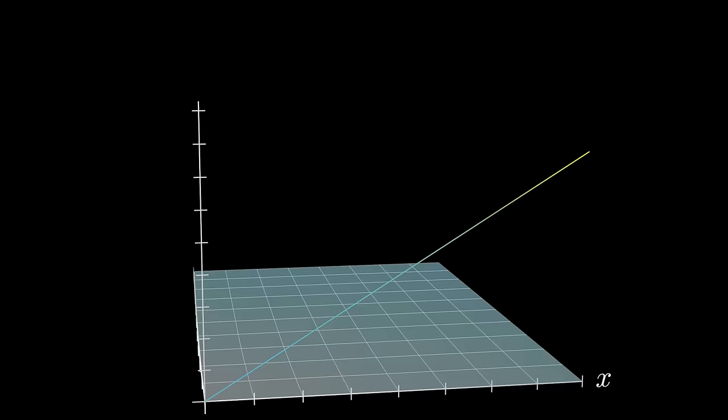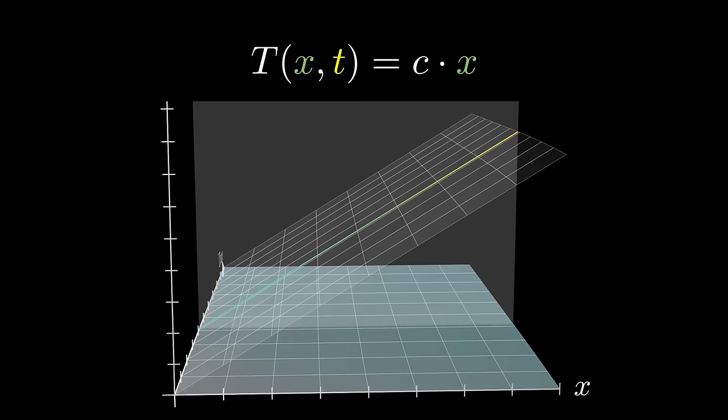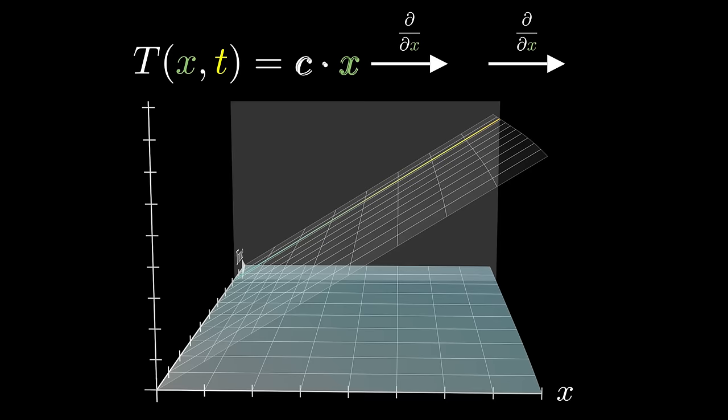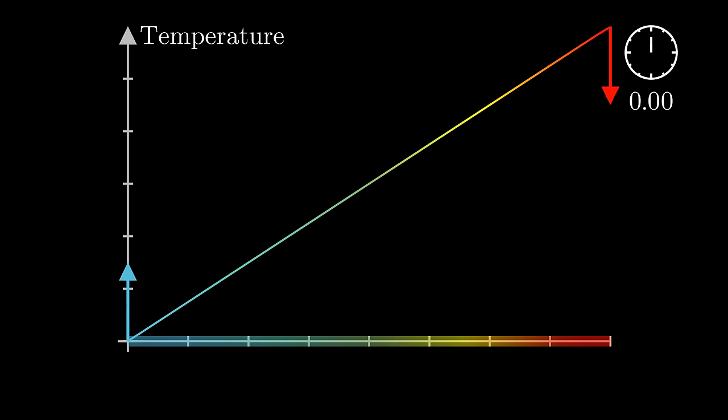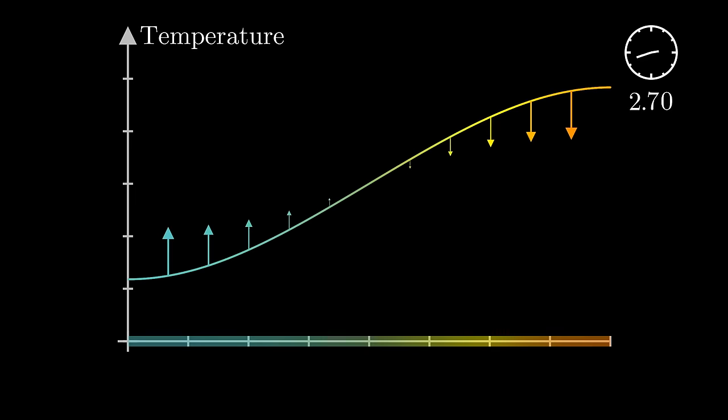In fact, let me give you an even simpler solution to the PDE, which fails to describe actual heat flow, a straight line. That is, the temperature function will be some non-zero constant times x and never change over time. The second partial derivative with respect to x is indeed zero, I mean there is no curvature, and its partial derivative with respect to time is also zero, since it never changes over time.